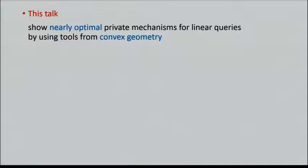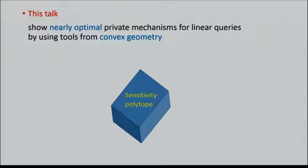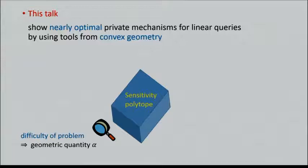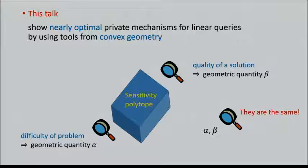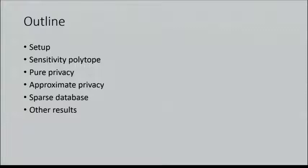Here is the overall strategy. I will introduce a central object called the sensitivity polytope. Looking at it from the bottom, we find some geometric quantity to bound the difficulty of the problem. From the top, we find another geometric quantity to bound the quality of some solution. We put those two numbers together, they're the same, and we're done. Here's the outline: first I describe the setup, then define the sensitivity polytope, then give all kinds of bounds.